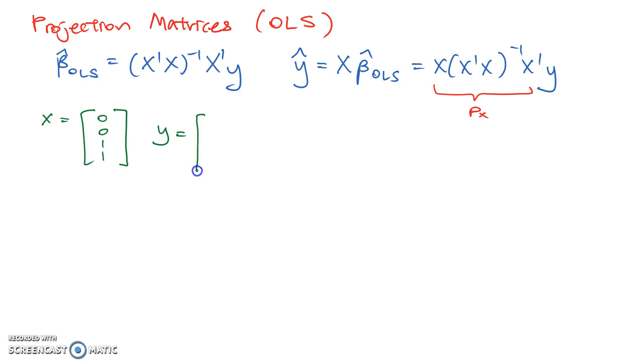And you also have data on their wages. So let the y vector be their wages. And if you don't work, obviously your wage is 0. And for the people that work, for the sake of an example, let's just say that their wages are 20 and 30 respectively for the third and fourth person. So let's calculate what the projection matrix will be.